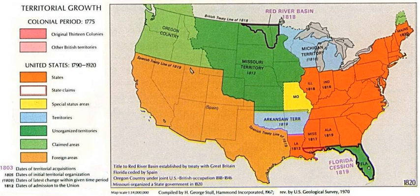The Missouri Compromise was the legislation that provided for the admission of Maine to the United States as a free state along with Missouri as a slave state, thus maintaining the balance of power between North and South in the United States Senate.